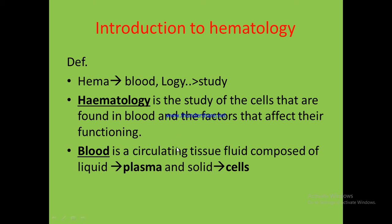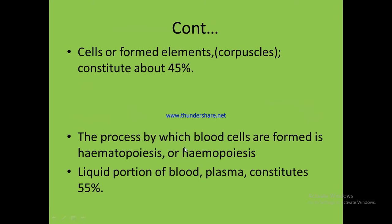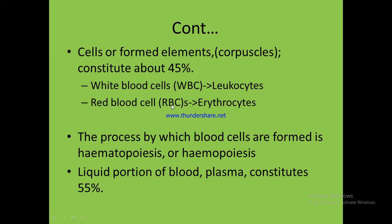Blood is a circulating fluid composed of a liquid and a solid portion. The liquid portion is plasma, whereas the solid portion is blood cells. Blood cells, also called formed elements, constitute about 45 percent of blood volume. These are white blood cells or leukocytes, red blood cells or erythrocytes, and platelets or thrombocytes.